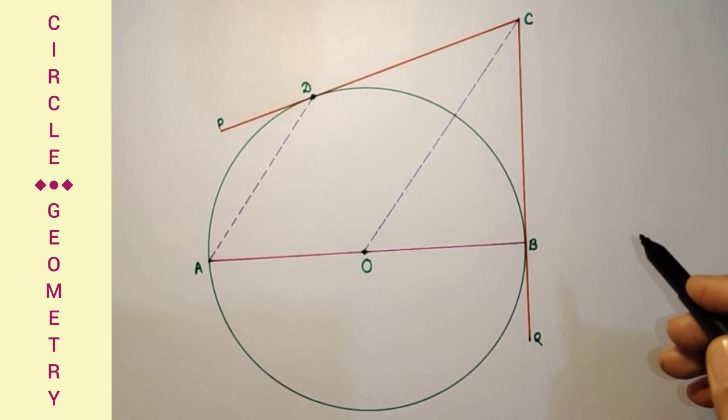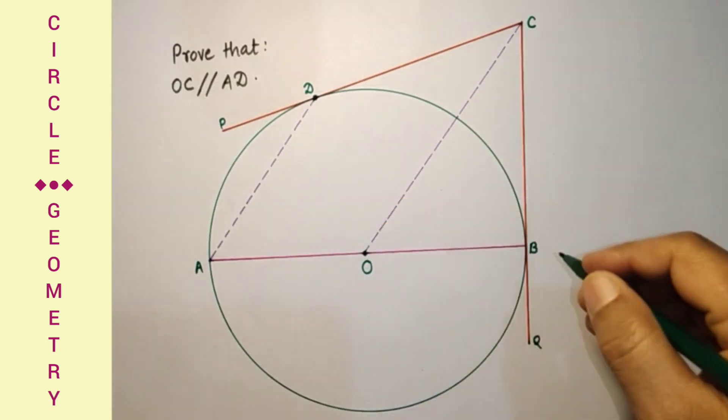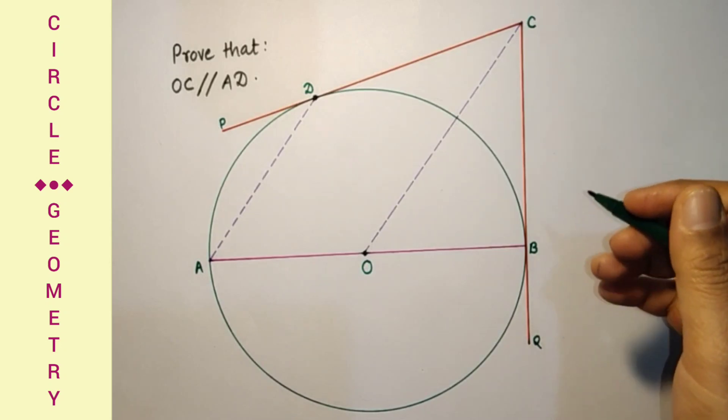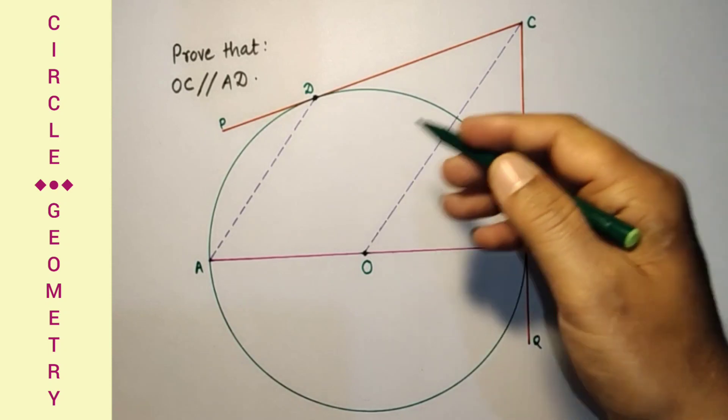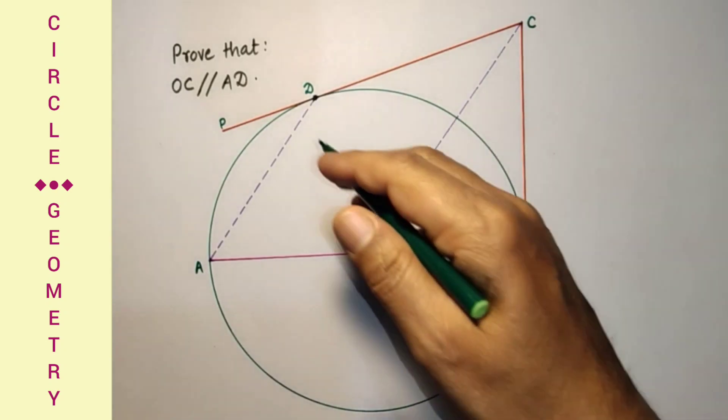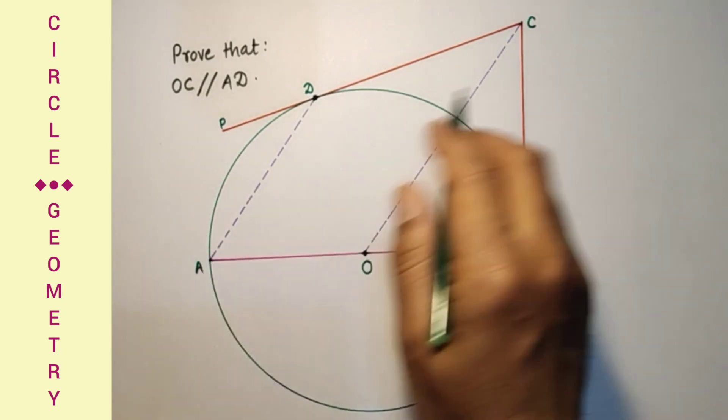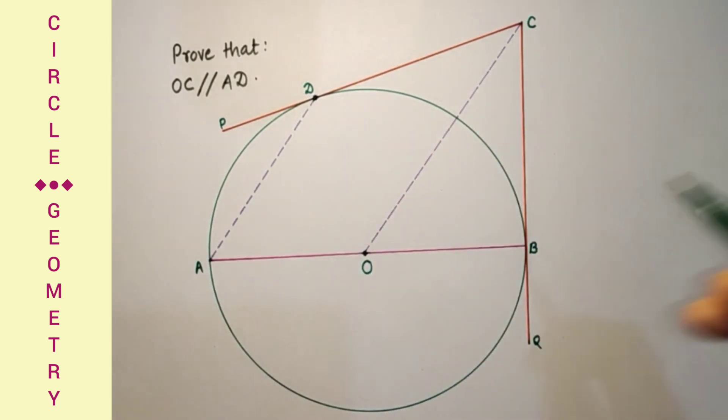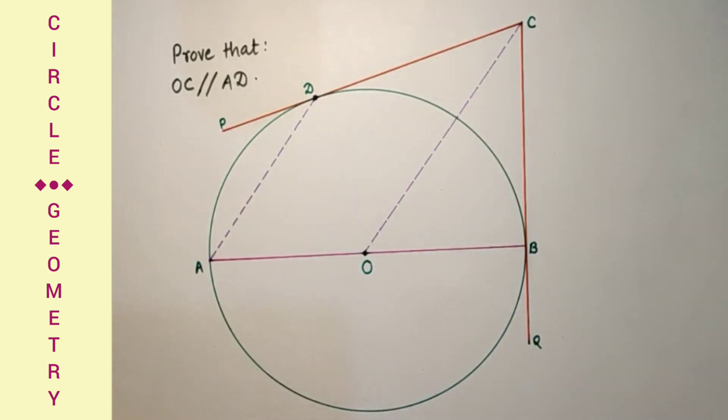We have to prove that AD is parallel to OC. Here point D and point B are the points of contact at which the tangents are touching. If we join DO then OD and DC are mutually perpendicular because radius and tangent at the point of contact will be mutually perpendicular.